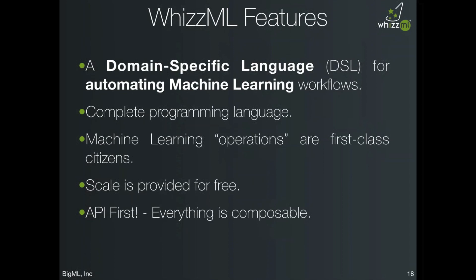Like all BigML resources, WizML was exposed through our API first, meaning everything is composable. This is an important design choice: all BigML machine learning resources and algorithms are implemented and brought to our API first. This ensures our API is always robust and fully featured, and all BigML resources can be automated.